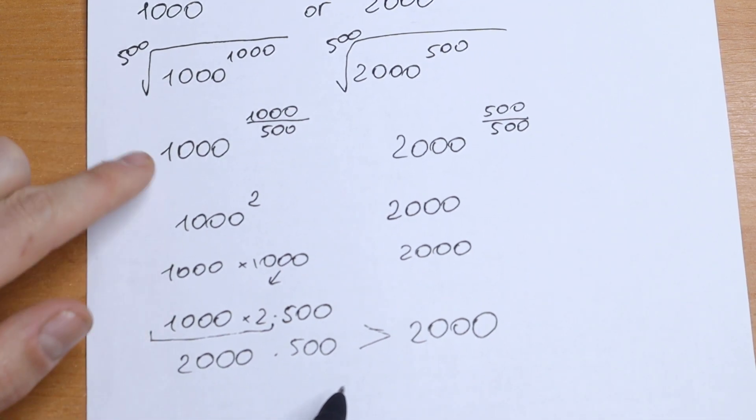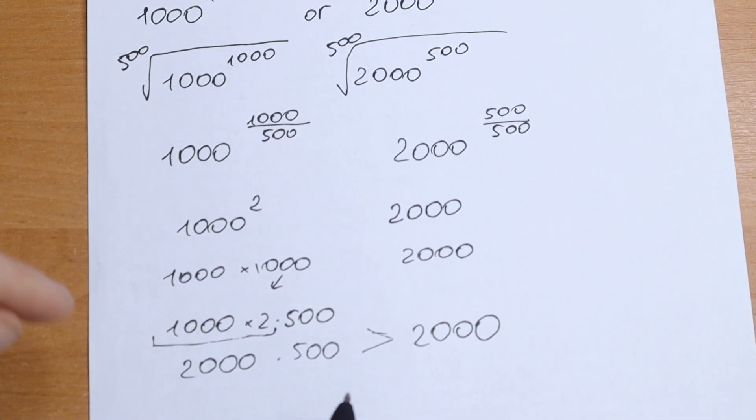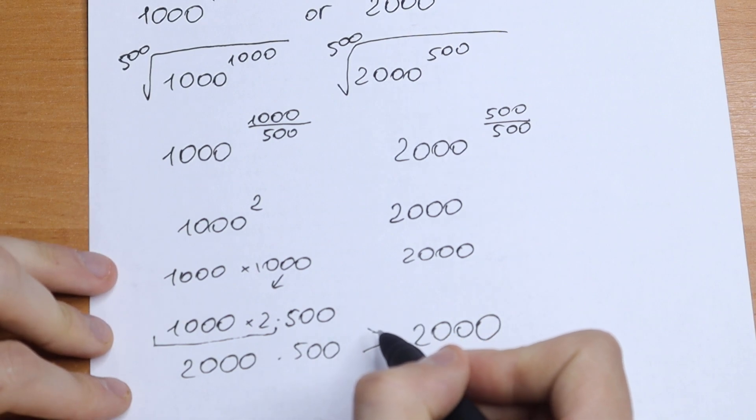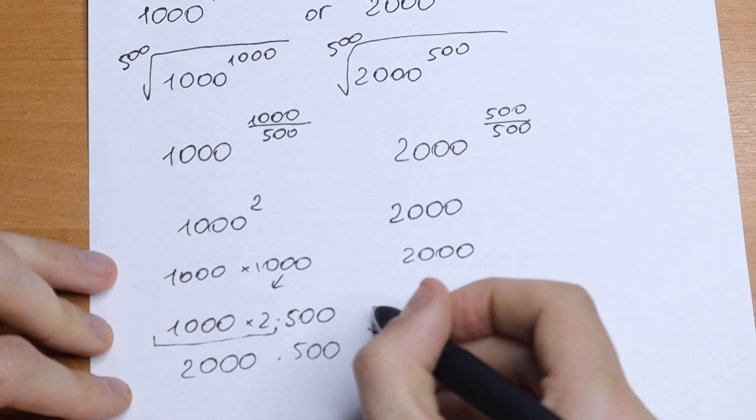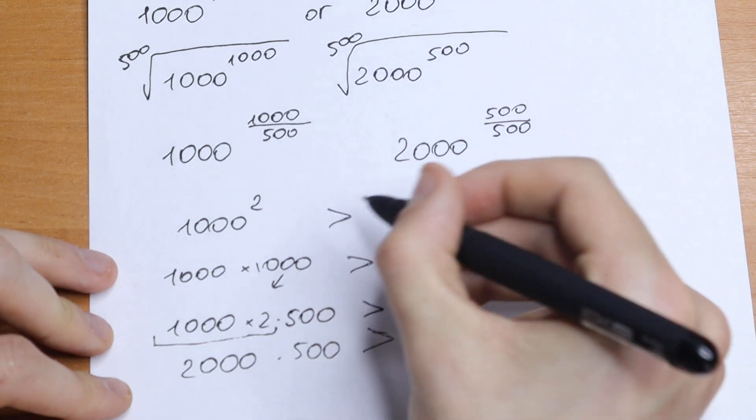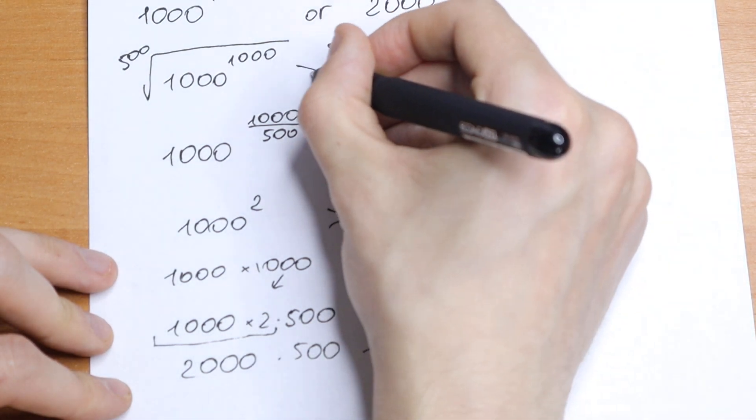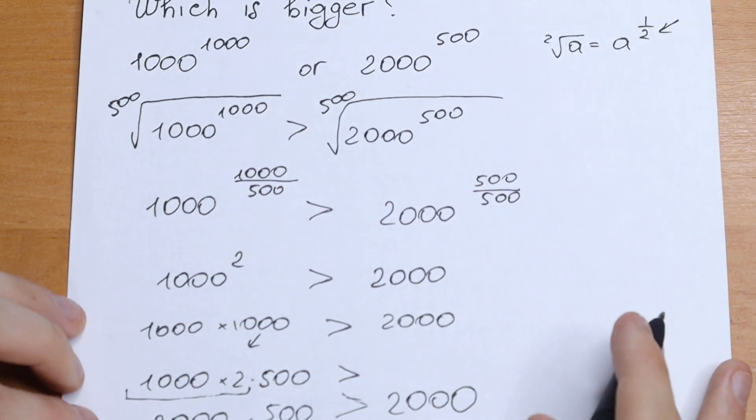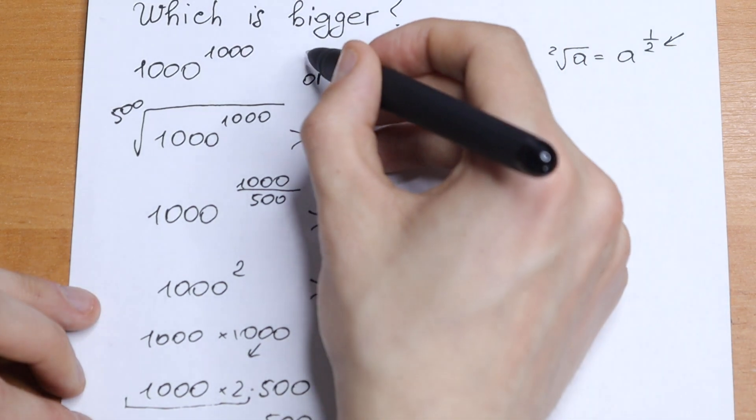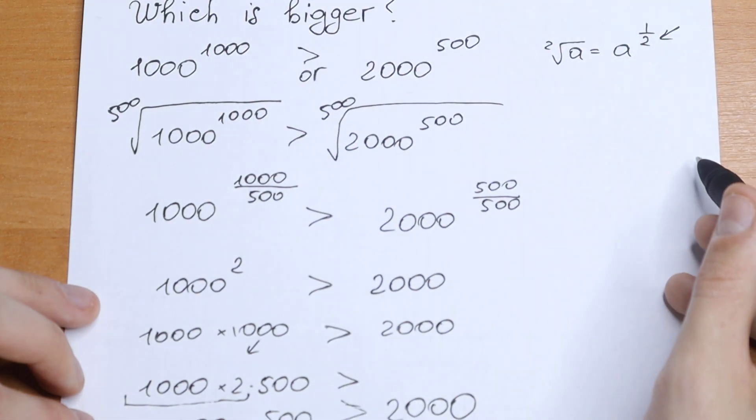So as you can see the left side will be bigger. And of course after every one of these steps we need to put this sign that our left is greater. And in the beginning we need to write that our left side is greater.